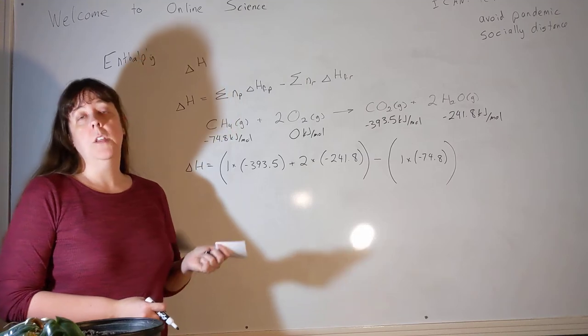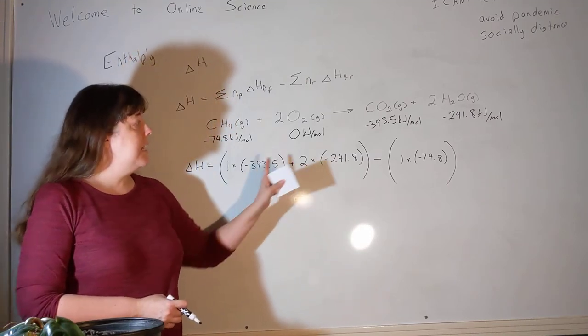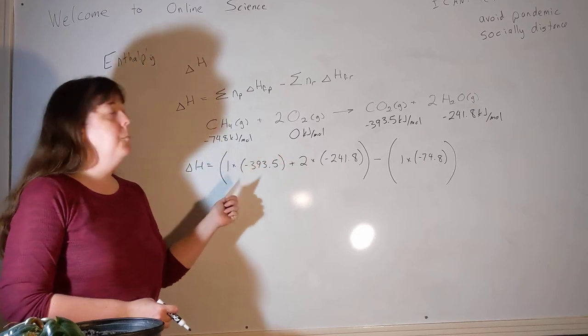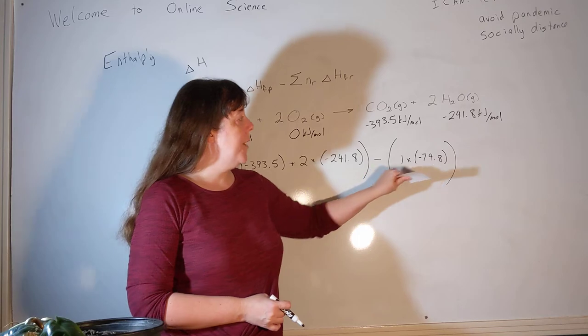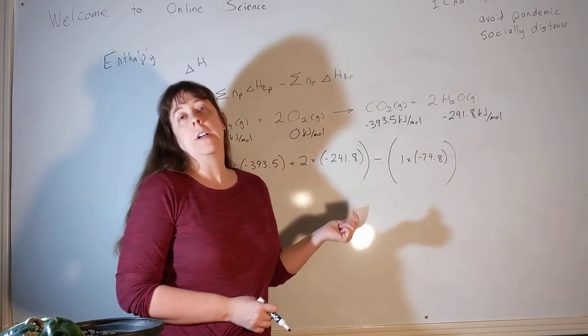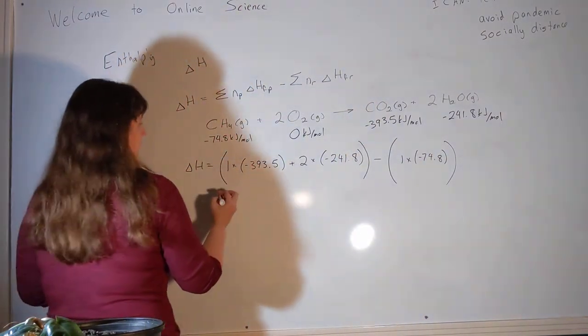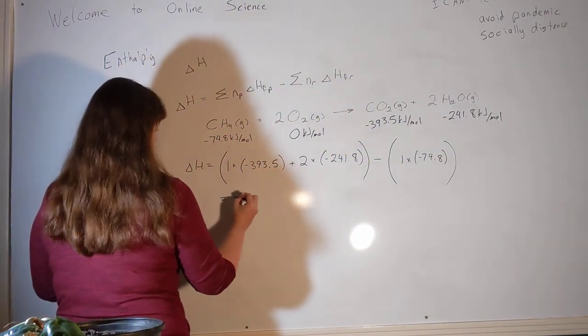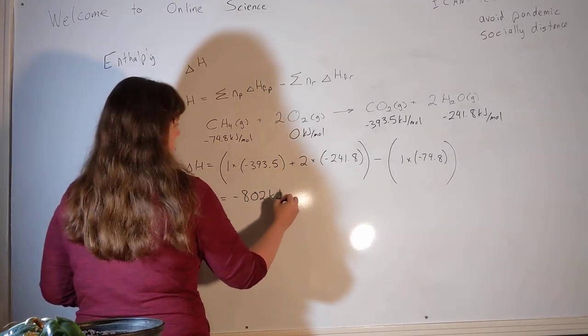There are a couple of places that we're likely to get into trouble though. As we're putting these pieces here together, we have to keep track of whether we're multiplying or adding. And then more importantly, out here, we're going to subtract a negative number. What's going to happen to those two negative signs? They're going to cancel out. So we're going to end up adding. So when I plug all of this into a calculator, I get that the delta H value for this reaction is minus 802 kilojoules per mole.